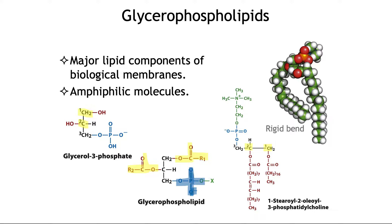You have this phosphodiester linkage linked to a polar charged head group. They differ by that connection on the phosphodiester linkage. At carbon two, the most common fatty acids are unsaturated carbon-18 or carbon-20 fatty acids. At carbon one, the most common are typically carbon-16 and carbon-18 saturated fatty acids, such as palmitic acid being a carbon-16 saturated, or stearic acid having 18 carbons. At carbon two, the fatty acids are unsaturated, so they have pi bonds.